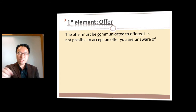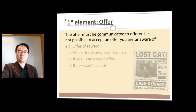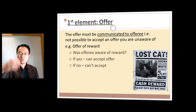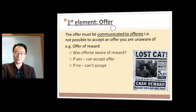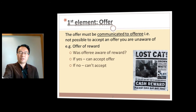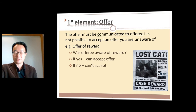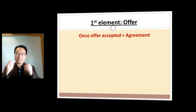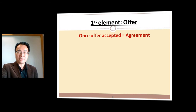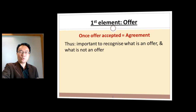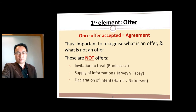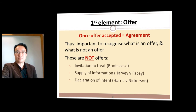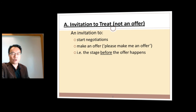You must also communicate the offer to the offeree. So if there's an offer out there and you didn't see it, you can't accept the reward because you never saw the offer in the first place. That's your first element — offer. Once the offer is accepted, you have an agreement. So it's important to know what is being offered and what is not an offer.